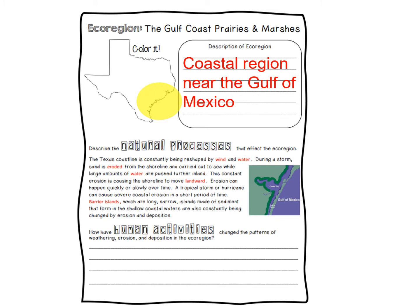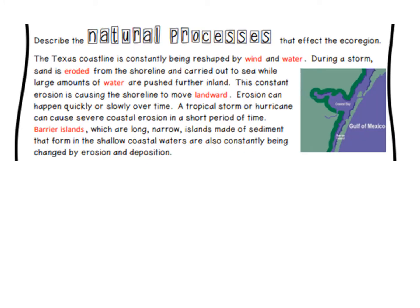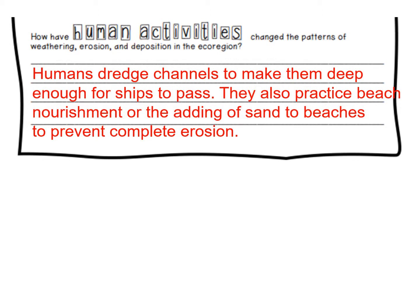The Gulf Coast Prairies and Marshes is going to be the coastal region near the Gulf of Mexico. We basically have barrier islands here, dredging that's going on, and sediment that's moving by either wind or water or large weathering and erosion events like a hurricane. This also talks about dredging and beach nourishment, which I already explained.